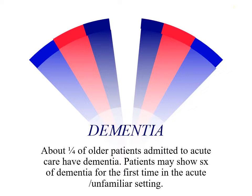Dementia — the first of our two major neurocognitive disorders. About a fourth of older patients admitted to the hospital show signs of at least mild dementia. Patients are sometimes very familiar with their homes — they've lived in them for 20 or 30 years — and they can get very confused, but it doesn't really show at home because they're so familiar with their settings. So when they come into the hospital, that's the first time we see any sign of dementia.